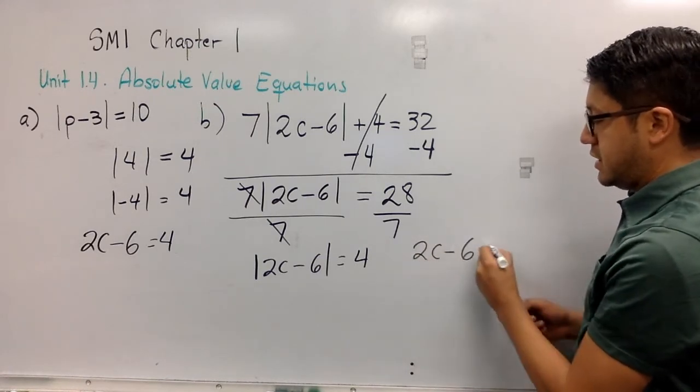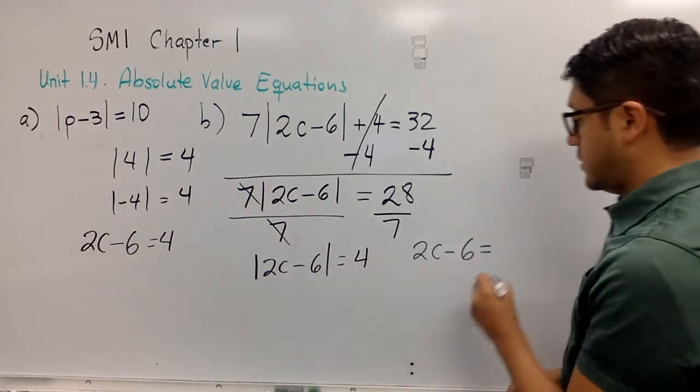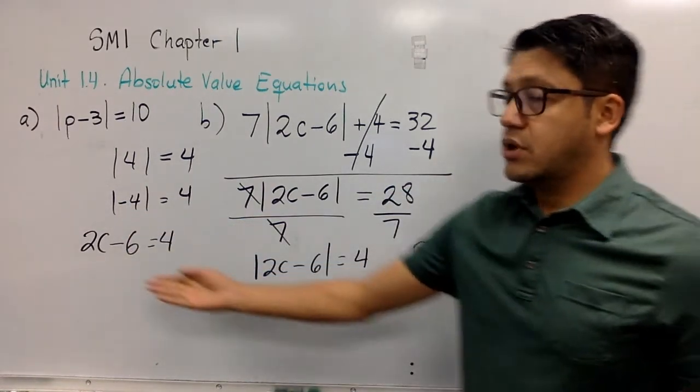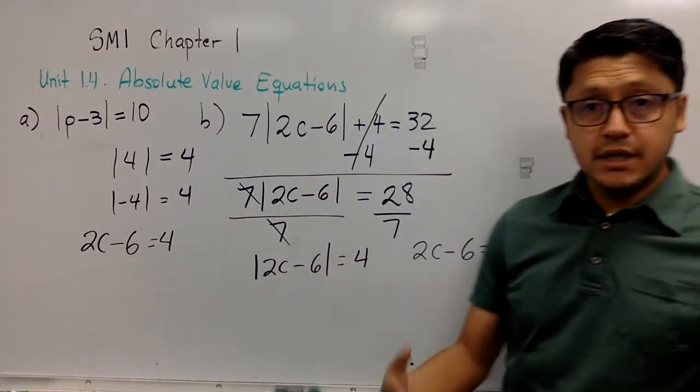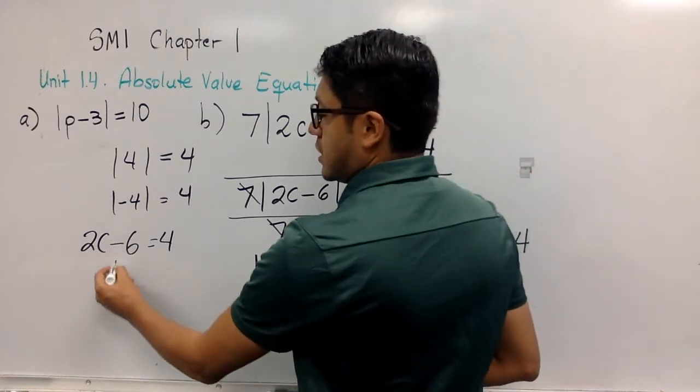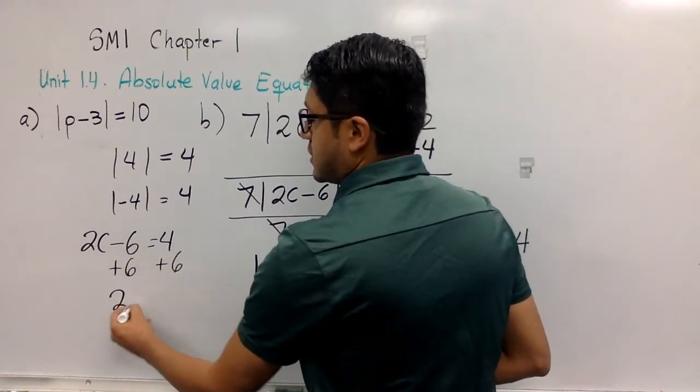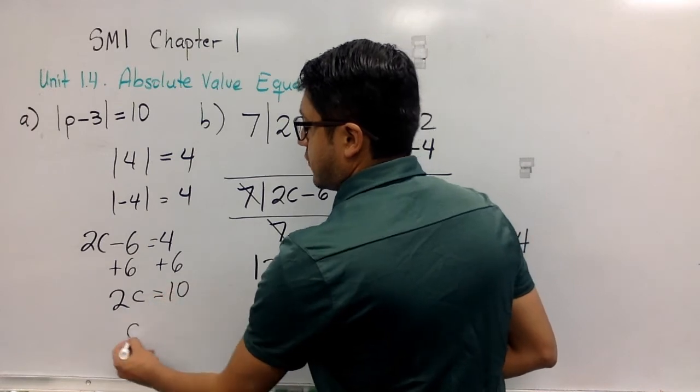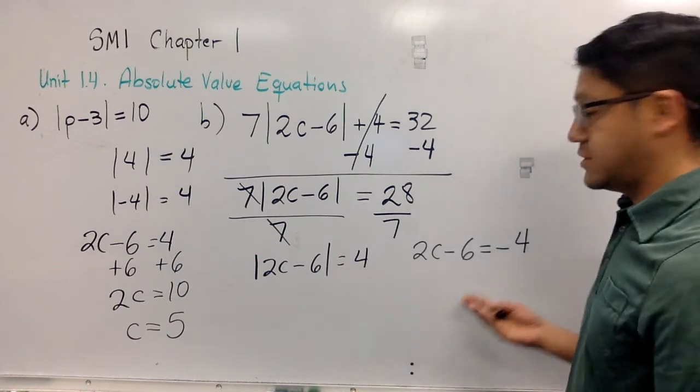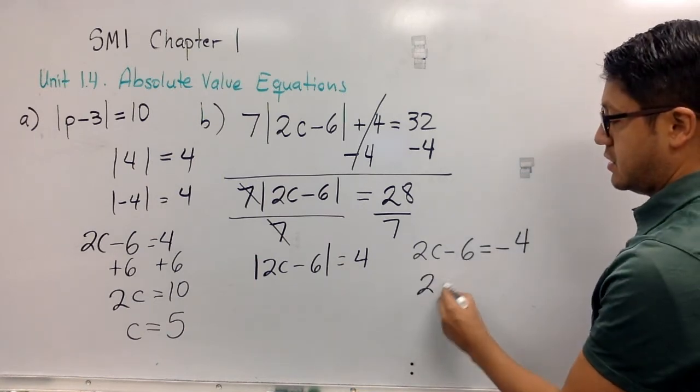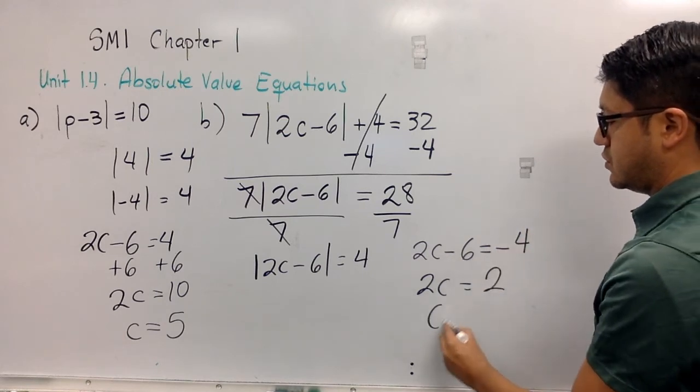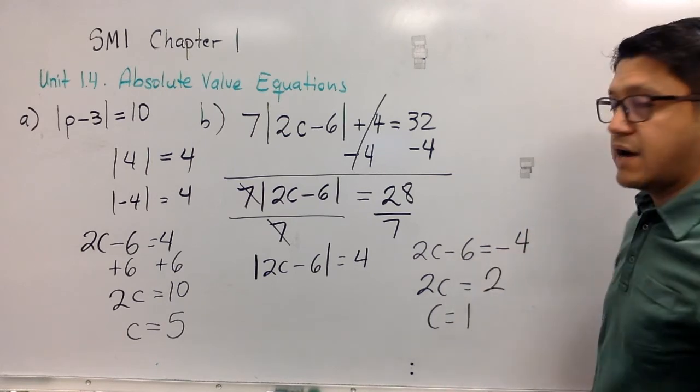With that in mind, I'm going to solve this equation and this equation independently so that I obtain the two solutions. I add 6 on both sides, and eventually c equals 5. And now let's do the same here. 2c equals, I add 6 here so that I get a 2, so c equals 1 after I perform the division.